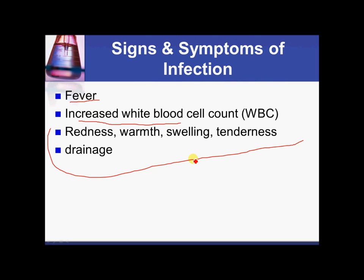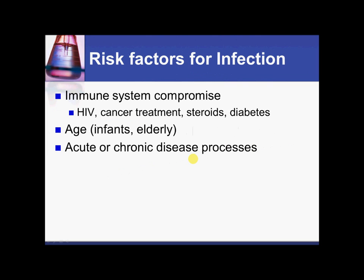Usually we look at all these signs together. Some patients are at higher risk for infection than others. These include immunocompromised patients such as those with HIV and AIDS, patients undergoing cancer treatment, patients who have taken corticosteroids, and patients with diabetes.